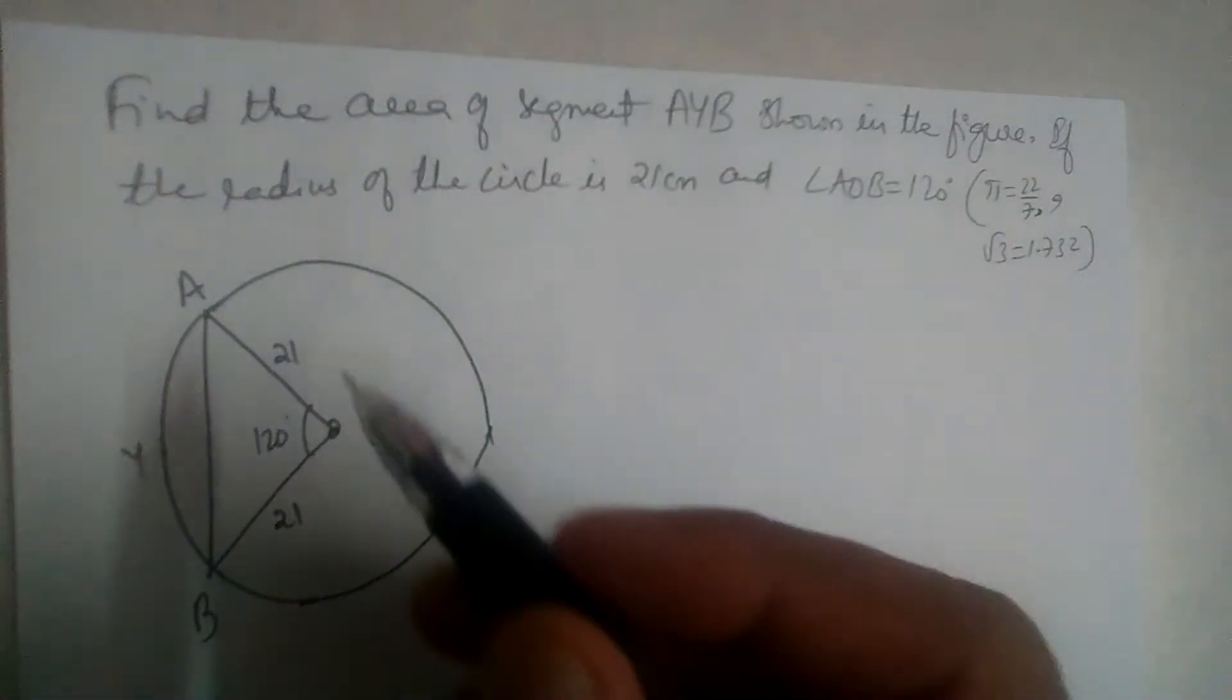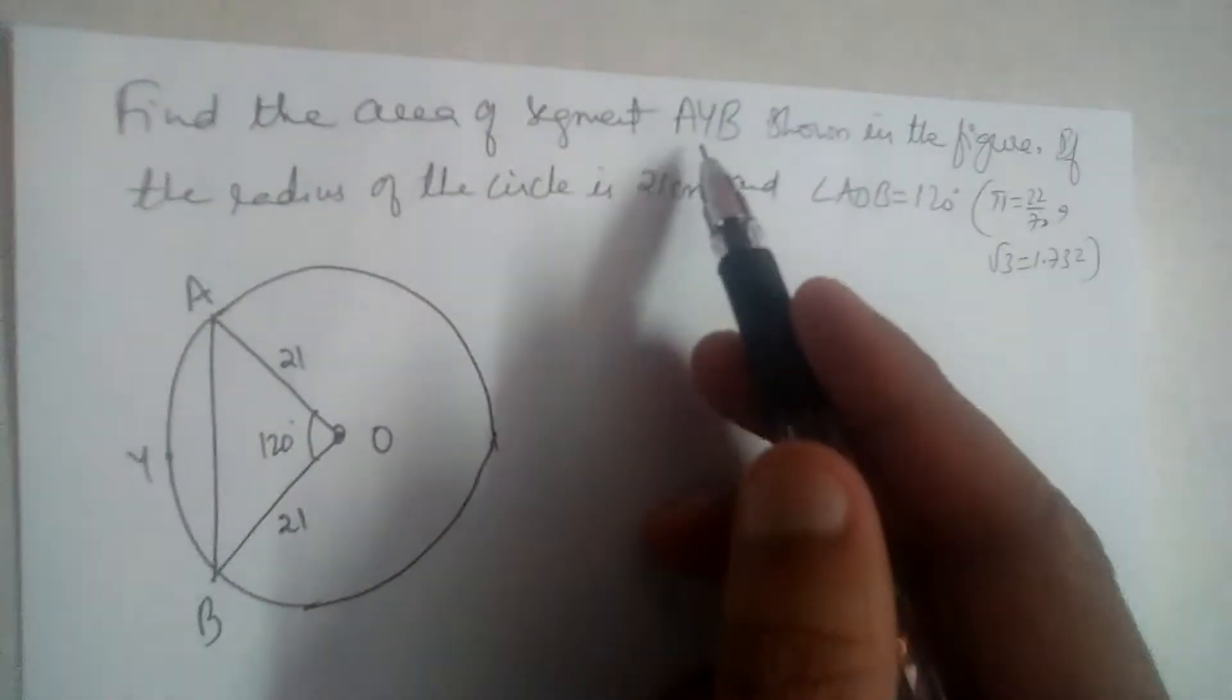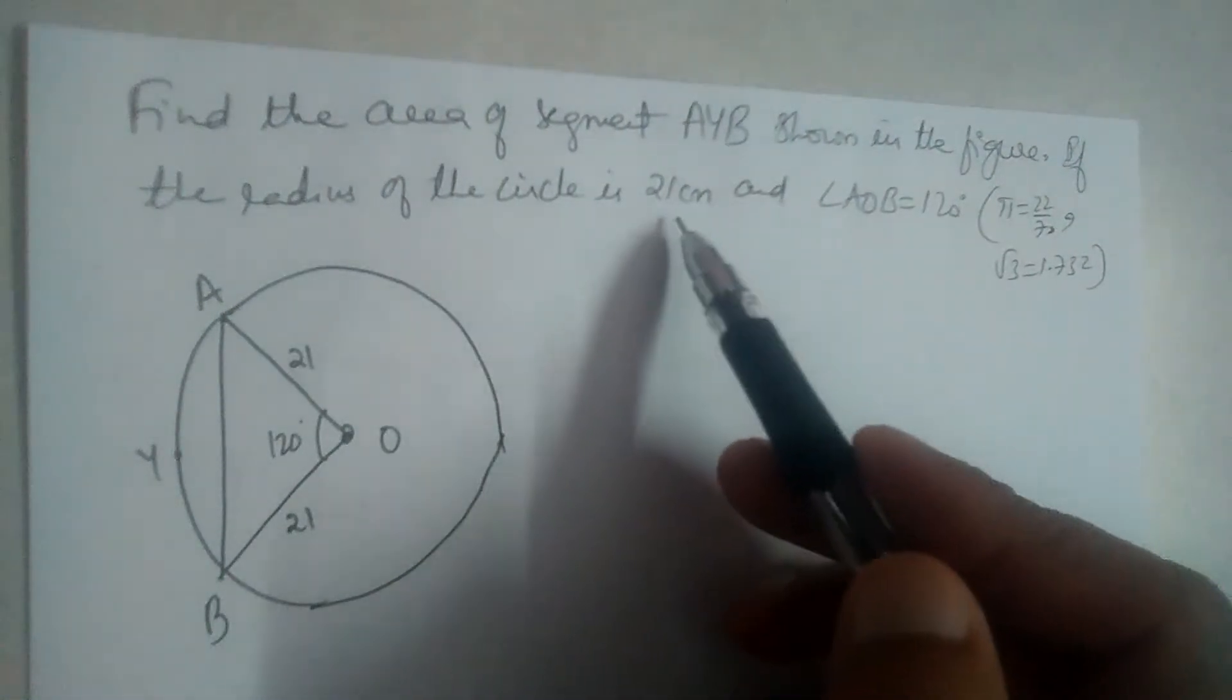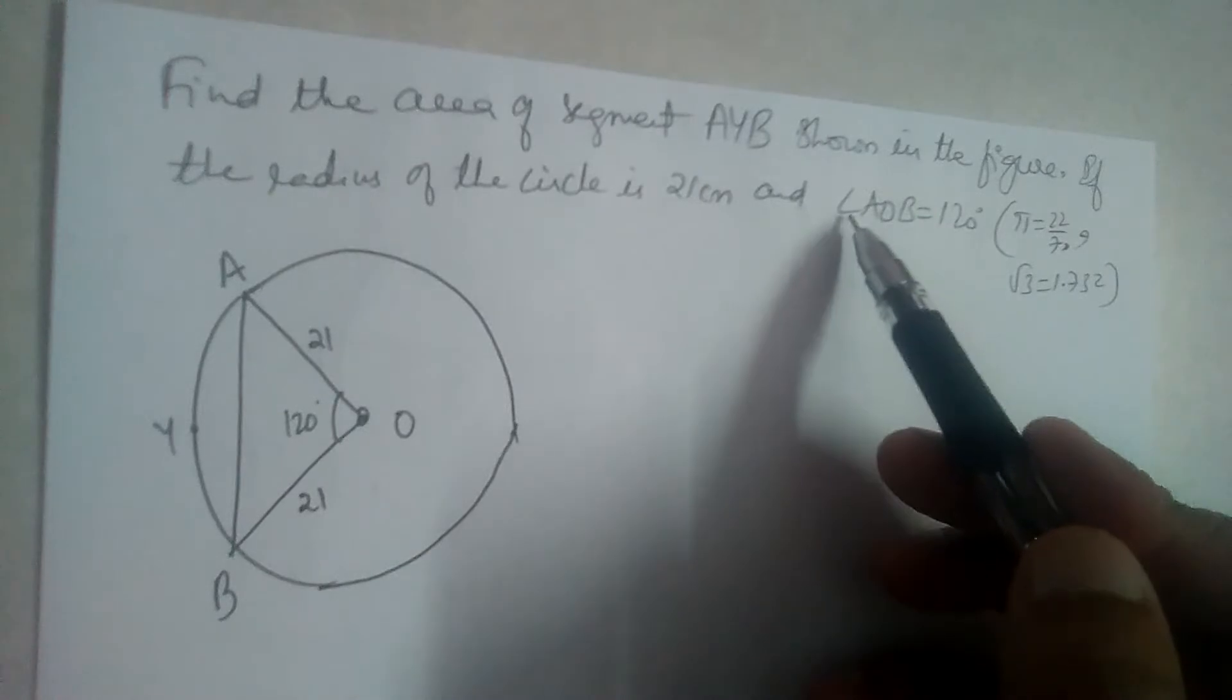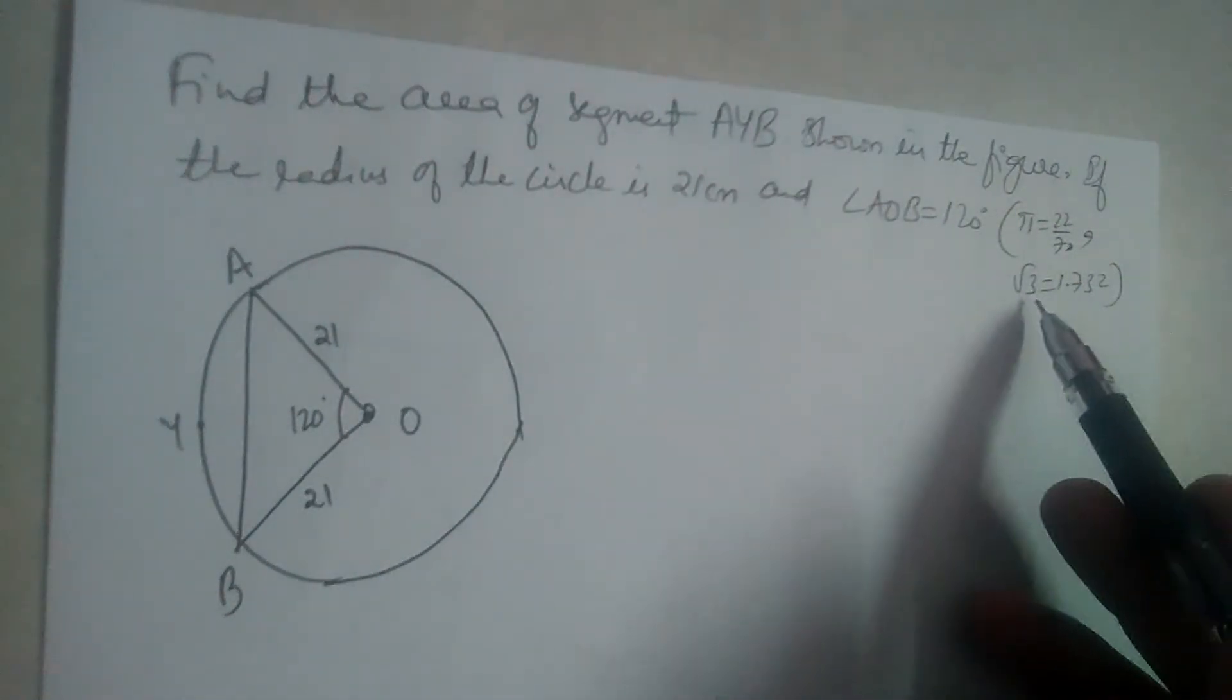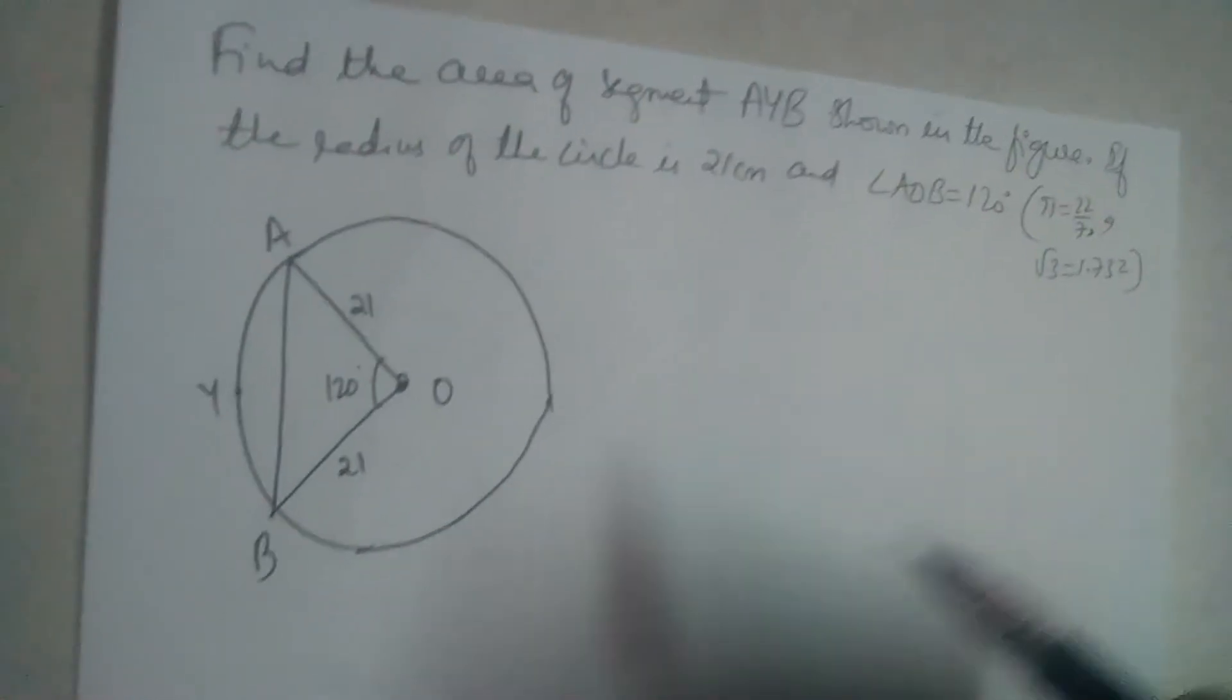Let us solve this problem. Find the area of segment AYB shown in the figure if the radius of the circle is 21 cm and angle AOB is 120 degrees. Take pi as 22 by 7 and root 3 as 1.732.